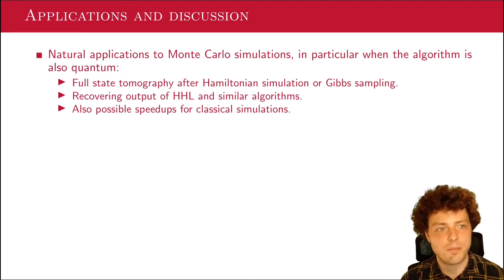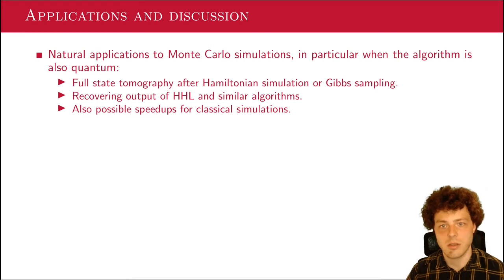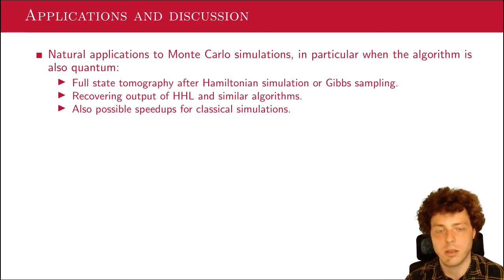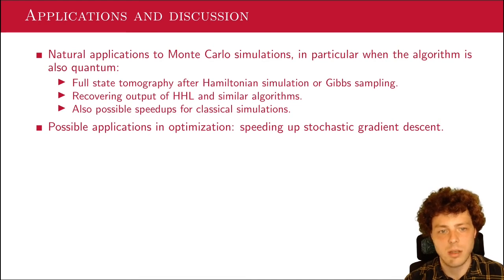So some applications and discussion. The most natural application, because we need the procedure to generate samples from our probability distribution is actually Monte Carlo simulation. So in particular, when the algorithm is also quantum, this could be very useful because we're running on a quantum computer anyway. So for example, full state tomography can be done faster after we've done a Hamiltonian simulation or Gibbs sampling in case of thermal quantum dynamics, or recovering the output of HHL or similar linear algebra algorithms, and possibly even speedups for classical simulations, where we have some classical Monte Carlo simulation that in the end produces some large distribution. And we would like to sort of get a view of this distribution. We can improve that with this algorithm.